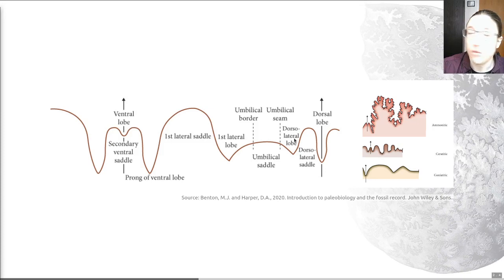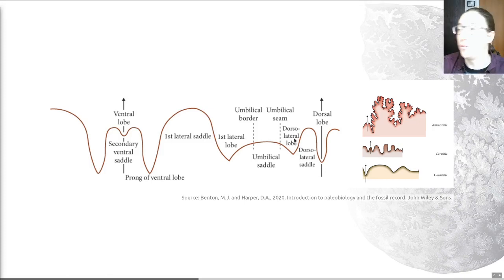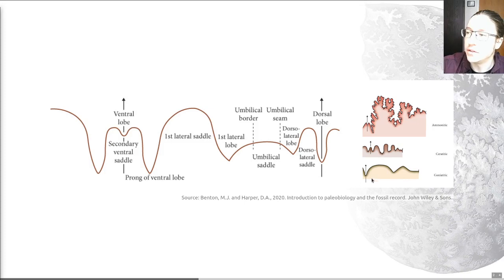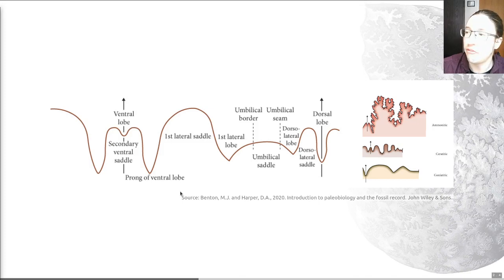The suture lines are really important for defining members of the ammonoids. There are three subgroups shown here — the goniotites, the ceratites, and the ammonites — with ammonoids being the encompassing group. The goniotites have sharp lobes and rounded saddles, and are typical of late Devonian to Permian ammonoids. Just above, you can see the ceratite suture lines, which have frilled lobes and undivided saddles.